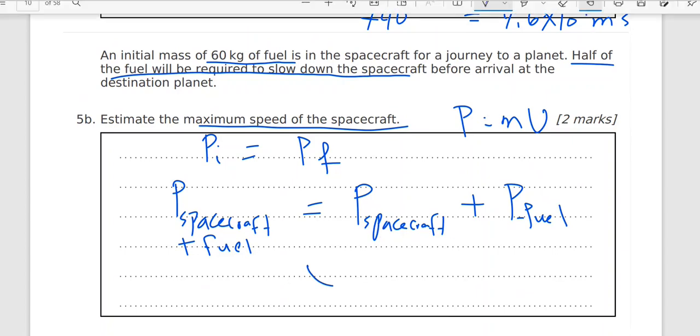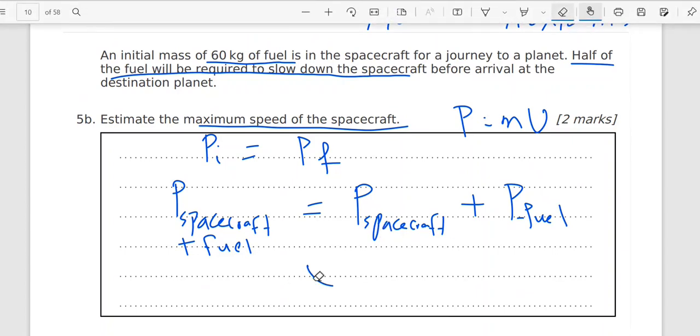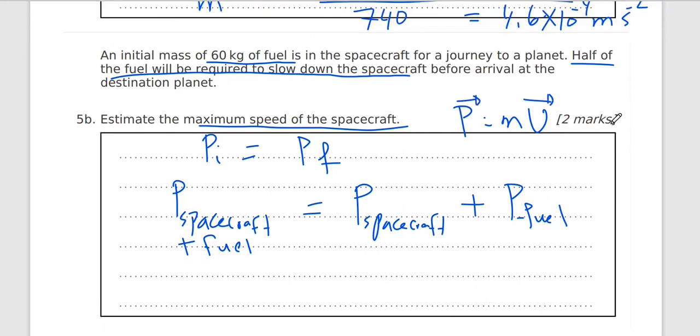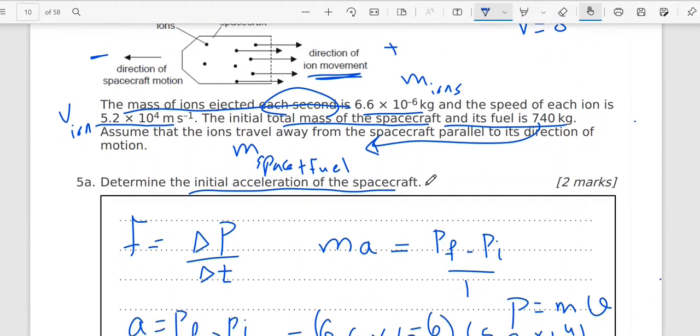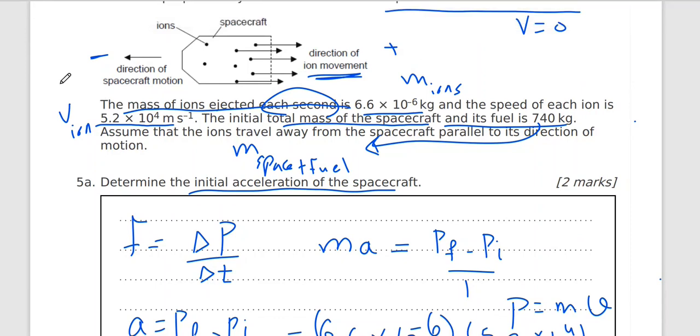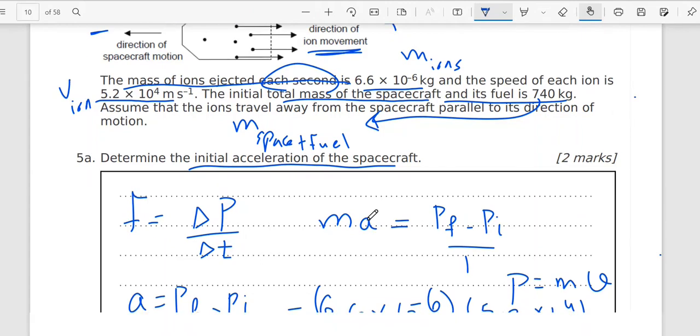The momentum is a vector quantity. So it will take the same direction as the velocity. To the right is positive, left is negative. So direction of spacecraft to the left is negative. Direction of the fuel positive. You can take the opposite, but we will agree that this is positive and negative direction.